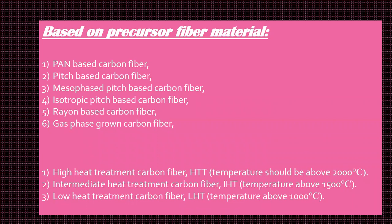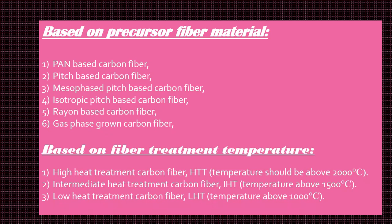The next type is based on precursor fiber material: PAN-based carbon fiber, pitch-based carbon fiber, mesophase pitch-based carbon fiber, isotropic pitch-based carbon fiber, rayon-based carbon fiber, and gas-phase grown carbon fiber. The third and last classification is based on fiber treatment temperature: High Heat Treatment carbon fiber (HTT), temperature above 2000°C; Intermediate Heat Treatment carbon fiber (IHT), temperature above 1500°C; and Low Heat Treatment carbon fiber (LHT), treatment above 1000°C.